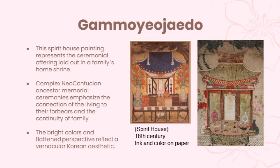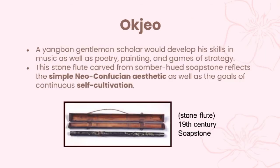The last example is called Oktyo, also known as the stone flute. A young gentleman scholar would develop his skills in music, as well as poetry, painting, and games of strategy. This stone flute carved from somber-hued sub-stones reflects the simple Neo-Confucian aesthetic, as well as the goals of continuous self-cultivation.